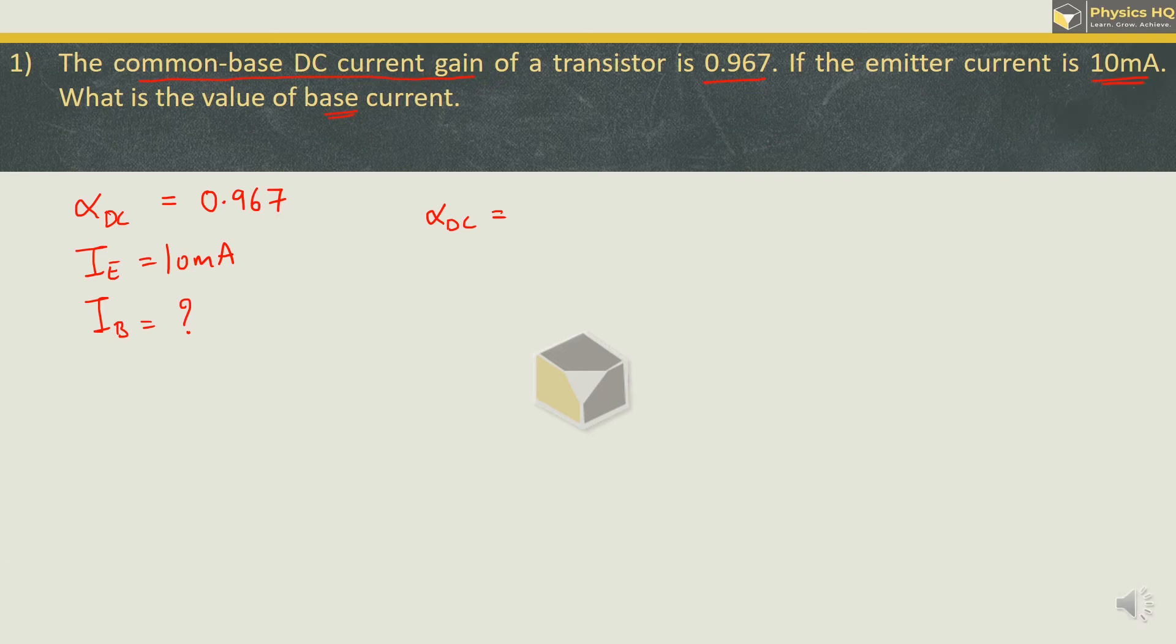So for a common base configuration, the output current is at the collector terminal and the input current is at the emitter terminal. In this diagram, you can see the output current at the collector terminal which is IC, the input current at the emitter terminal that is IE, and the base terminal giving the current IB.